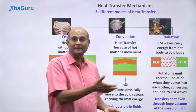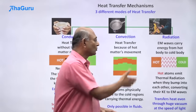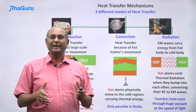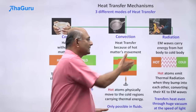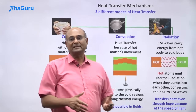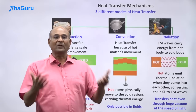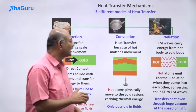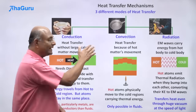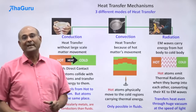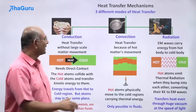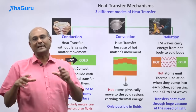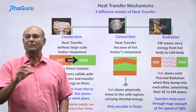Hot objects radiate out energy, some of this radiation reaches the cold object and transfers energy to it. So these are three different ways in which heat transfer happens. We are now going to take each of these and study them in a little more depth.